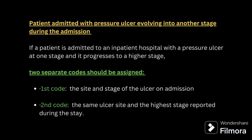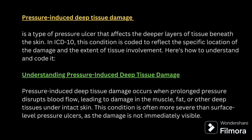Next, patient admitted with pressure ulcer evolving into another stage during admission. Evolving means changing or progressing. If a patient is admitted with a pressure ulcer at one stage and it progresses to a higher stage, you have to assign two codes: first, code for site and stage at the time of admission; and second, code for site and the highest stage reached during the stay.